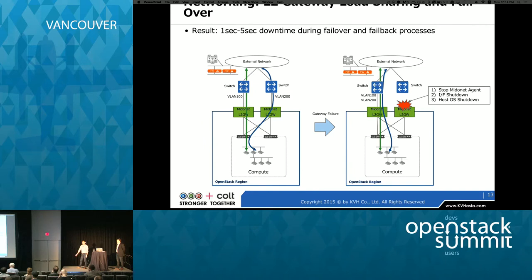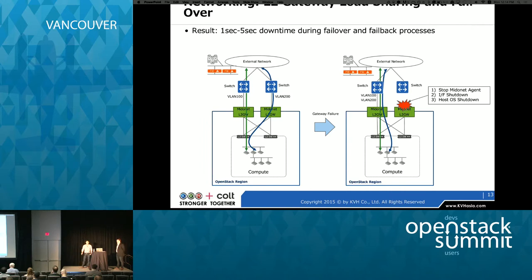We understand this is a layer 2 limitation. The problem is that when failover and failback both happen, there are two downtimes. If a switch is rebooting again and again with interface flapping, the network will be flapping as well. This area needs to be improved, but it is typical layer 2 behavior and we can control this point.